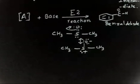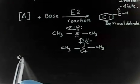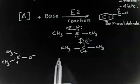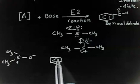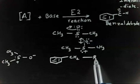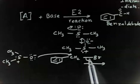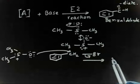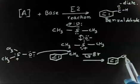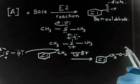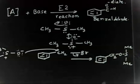So you have the nucleophile: oxygen with a negative charge, sulfur with a positive charge, and two methyl groups on sulfur. This nucleophile oxygen attacks the CH2 of benzyl bromide via SN2, and bromide leaves. The intermediate formed is Ph-CH2-O-S(+)(CH3)2, where sulfur carries a positive charge.